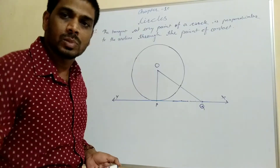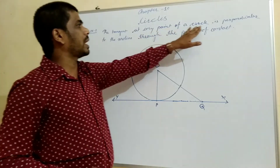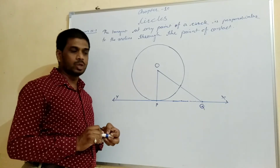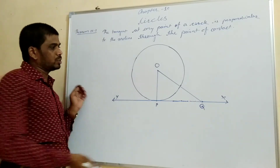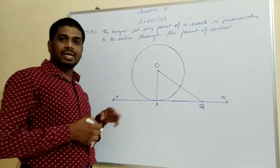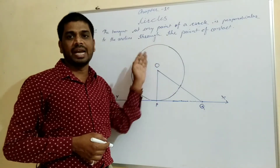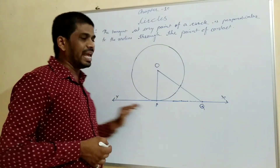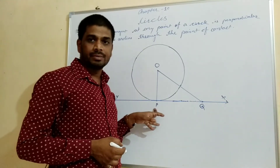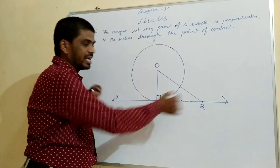Let us see this theorem: The tangent at any point of a circle is perpendicular to the radius through the point of contact. We will see this through the diagram. We are given a circle with center O and tangent XY to the circle at a point P.